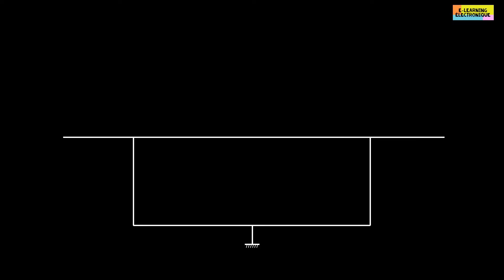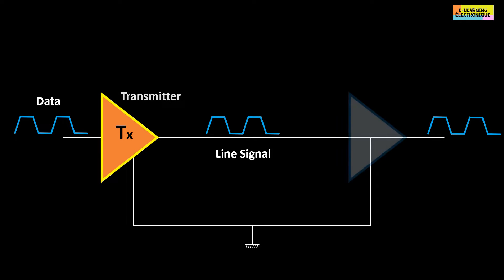The simplest way to transmit data is to use a circuit built with two wires. One will be used to transport the electrical signal and the second one is connected to the ground and will be used as reference. In this circuit is placed a transmitter, noted TX, and a receiver noted RX.